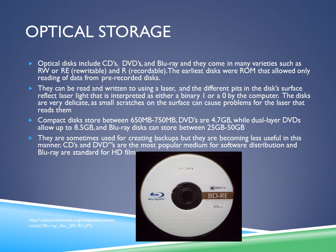Optical storage. Optical disks include CDs, DVDs, and Blu-ray disks, and they come in many varieties such as RW or RE (rewritable) and R (recordable). The earliest disks were ROM that allowed only reading of data from pre-recorded disks. Optical storage disks can be read and written to using a laser, and the different pits on the disk's surface reflect laser light that is interpreted as either a binary one or a zero by the computer. The disks are very delicate as small scratches on the surface can cause problems for the laser that reads them.